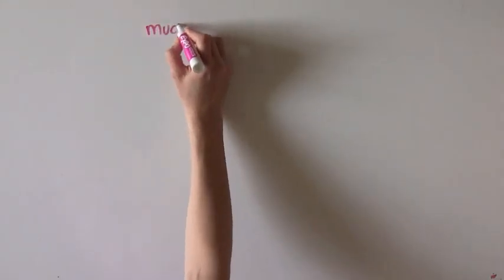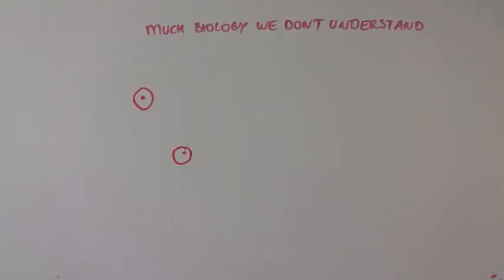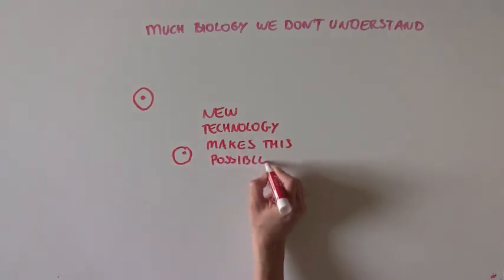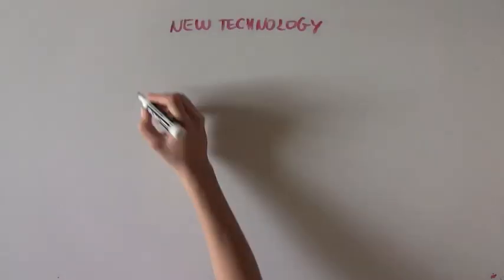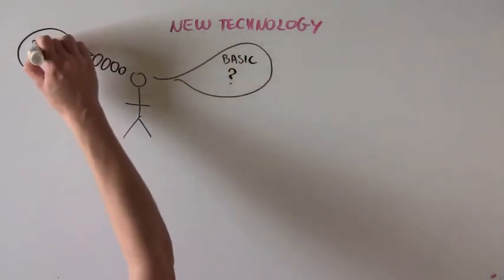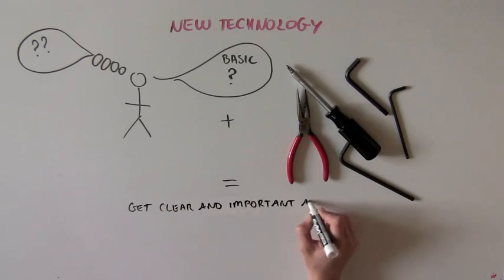So as you can see, there is still much biology that we don't understand because of the difficulty in identifying and isolating rare cells. But with all of the new technology around, it's becoming much easier to do this kind of research. So scientists are now able to go back, ask new basic questions that they had always wondered about, and have the tools necessary to get clear and important answers like never before.